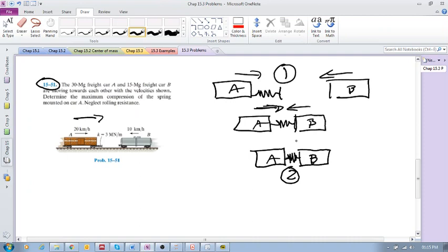But then at state two, I'm going to call this state two at maximum compression, there's no more relative motion between A and B because the spring is no longer being compressed. So at this point both A and B have the same velocity, because they are essentially one body.